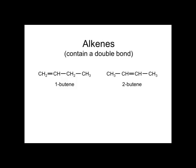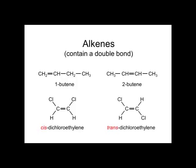With a double bond, there are possibilities of cis and trans isomers. The compound on the left is cis-dichloroethylene, and on the right it is trans-dichloroethylene. It could also be referred to as ethene.